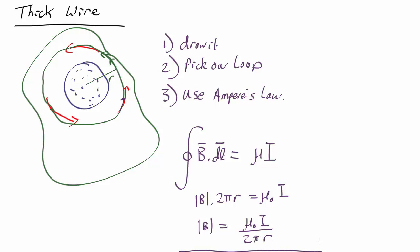Very easy. And this gives us that as r increases, the magnetic field goes down because our loop is bigger.